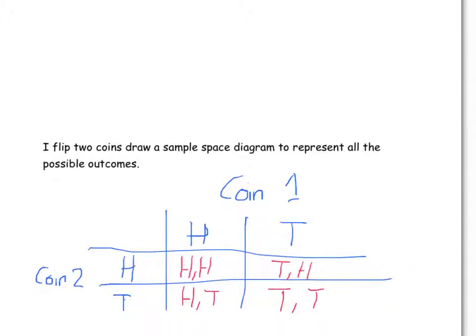In a sample space diagram, we've just taken our list from above and made it into a little table of our two different things we're looking at, coin one and coin two, and listed all the possible outcomes. Sometimes it could be to do with a dice being rolled, two dice being rolled and the scores being added together. Then you'll have the numbers one to six on the first dice.